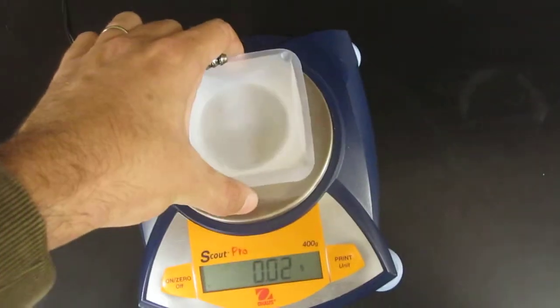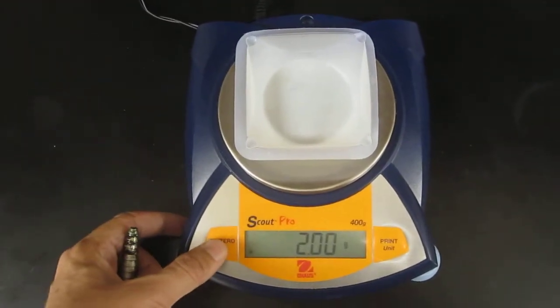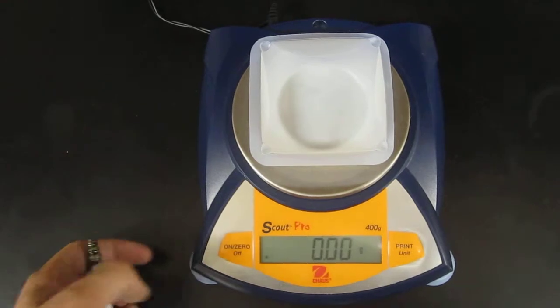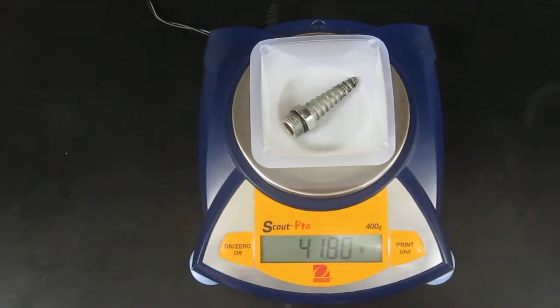So the first thing you want to do is put a weigh boat on your balance, tare your balance or zero it out, and then weigh your irregular object.